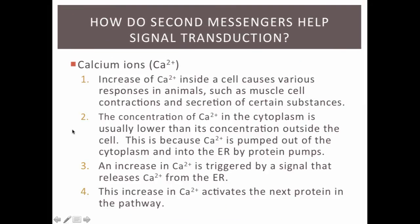Another example of a second messenger is calcium ions. An increase in calcium ions inside of a cell can cause different cell responses, such as the contraction of muscle cells and the secretion of different substances. The concentration of calcium ions within the cell is typically lower than outside the cell, because calcium is constantly being pumped into the endoplasmic reticulum by protein pumps. An increase in calcium concentration within the cell is triggered when the cell receives a signal telling the ER to release calcium into the cytoplasm, activating other proteins along the pathway.